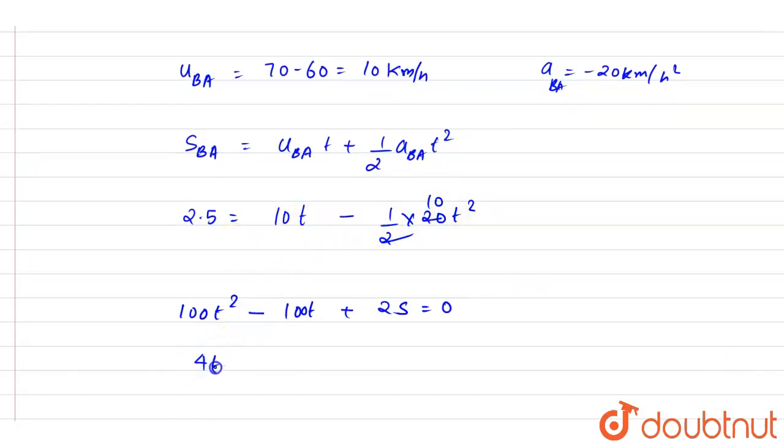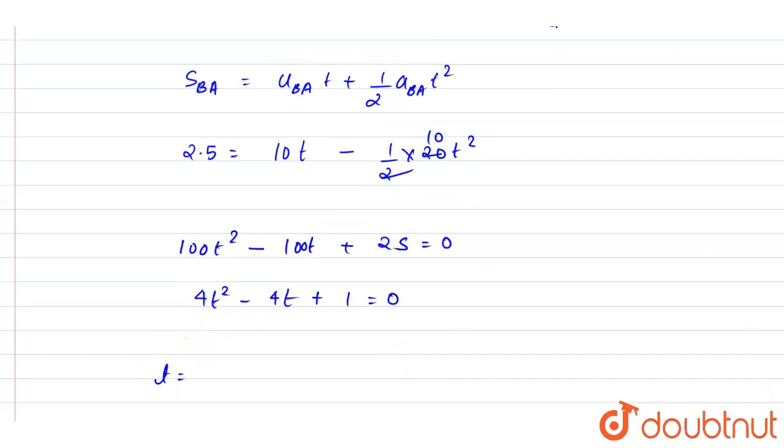So you can just solve it for t. We'll write down: t = (-b ± √(b² - 4ac)) / 2a. That is 4 ± √(16 - 16) / 8. If you see a times c, which is 4 times 4, divided by 2a, which is 8. So it will be half second, half hour.